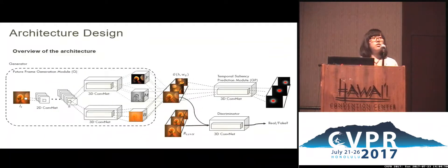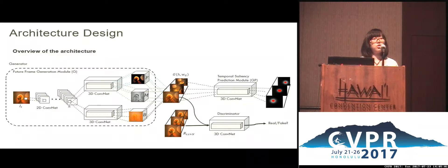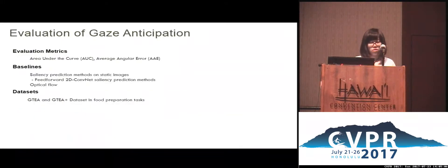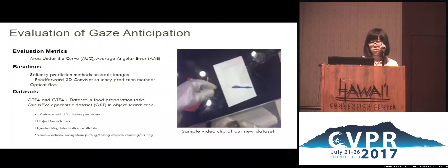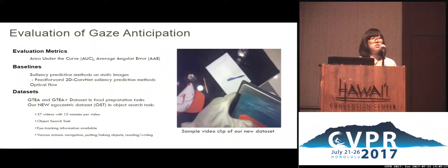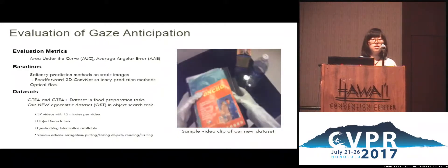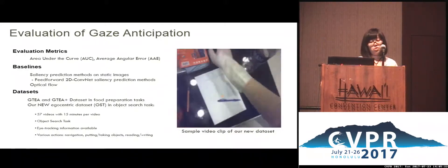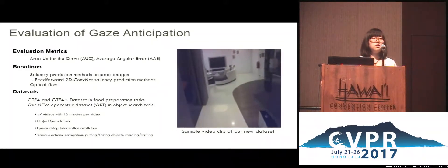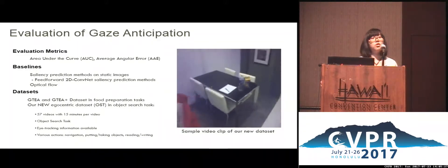So far, we have introduced the four factors that drive our architecture design. In an ablation study, we verify that these four factors are indeed useful for gaze anticipation. We conduct our experiments on publicly available datasets using two standard evaluation metrics. Furthermore, we contribute a new egocentric dataset, which is one of the largest in object search tasks with eye-tracking information available. We recruited 55 subjects and collected 57 videos, with each lasting for about 50 minutes.